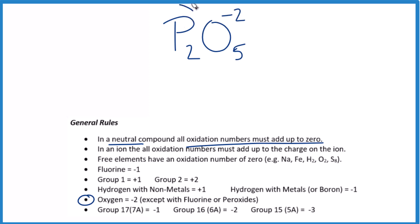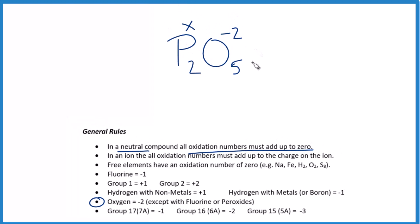The question is: what is the oxidation number on each phosphorus? 5 times negative 2 is negative 10, so for X, we need a positive 5 so that all the oxidation numbers add up to zero. 2 times positive 5 is positive 10, and 5 times negative 2 is negative 10 — everything adds up to zero.